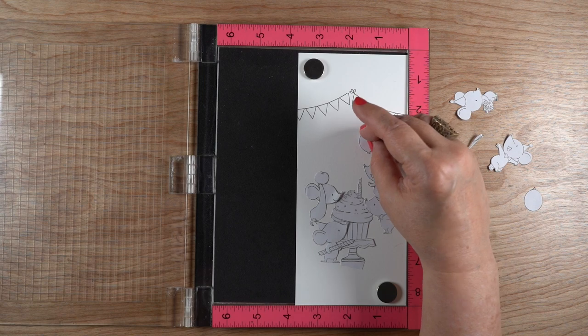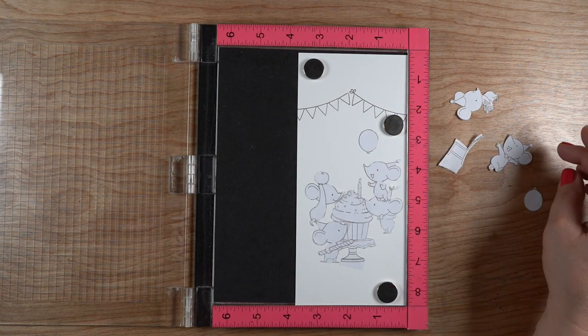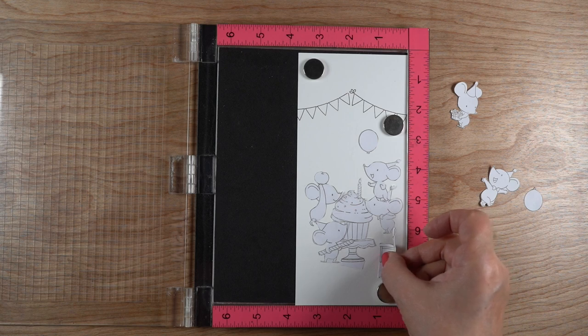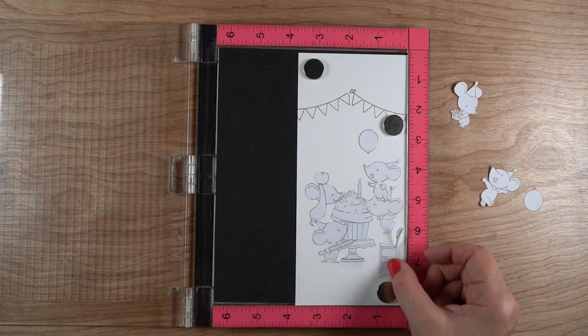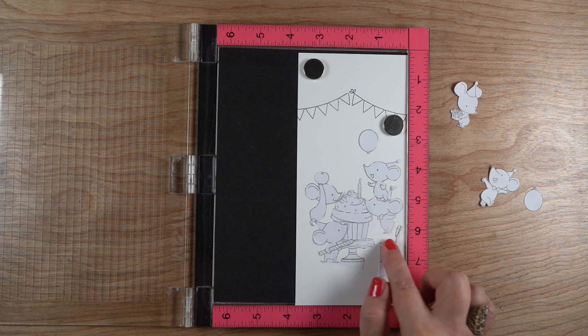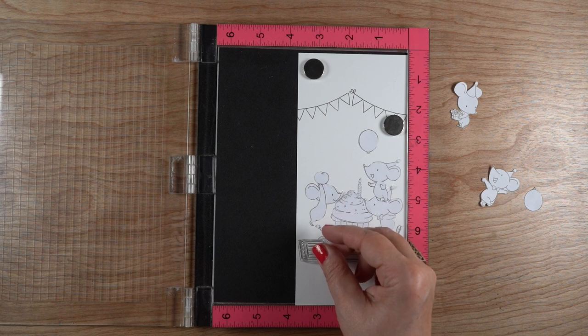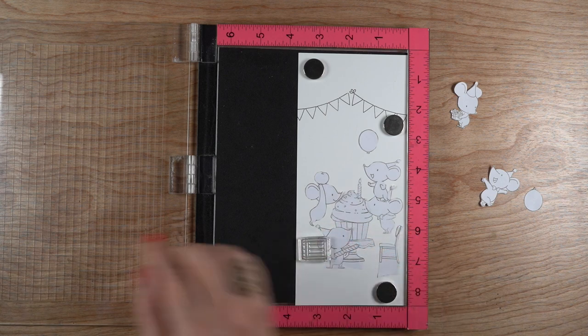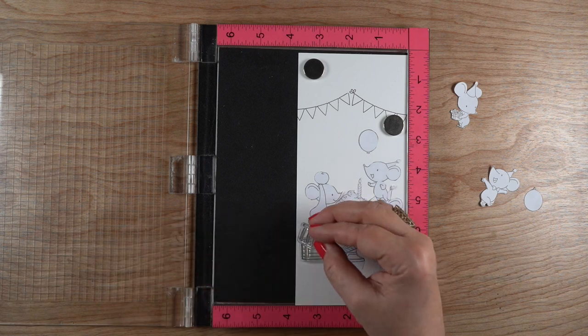He's going to be standing on a stack of boxes, and the stack of boxes is going to need to be masked out behind the little guy licking the frosting. He's going to be standing on a chair because none of these mice are tall enough to reach the cupcake on their own.